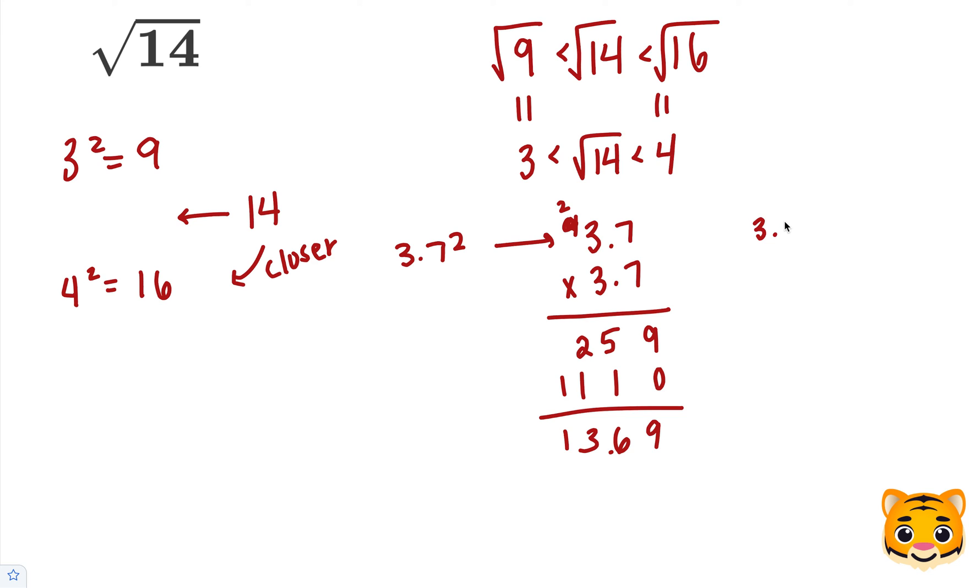So we can say that 3.7 squared gives us approximately 14. Now if we take the square root of both of these values, we get 3.7 is approximately the square root of 14. So this will be our tenths place approximation for the square root of 14. Thank you.